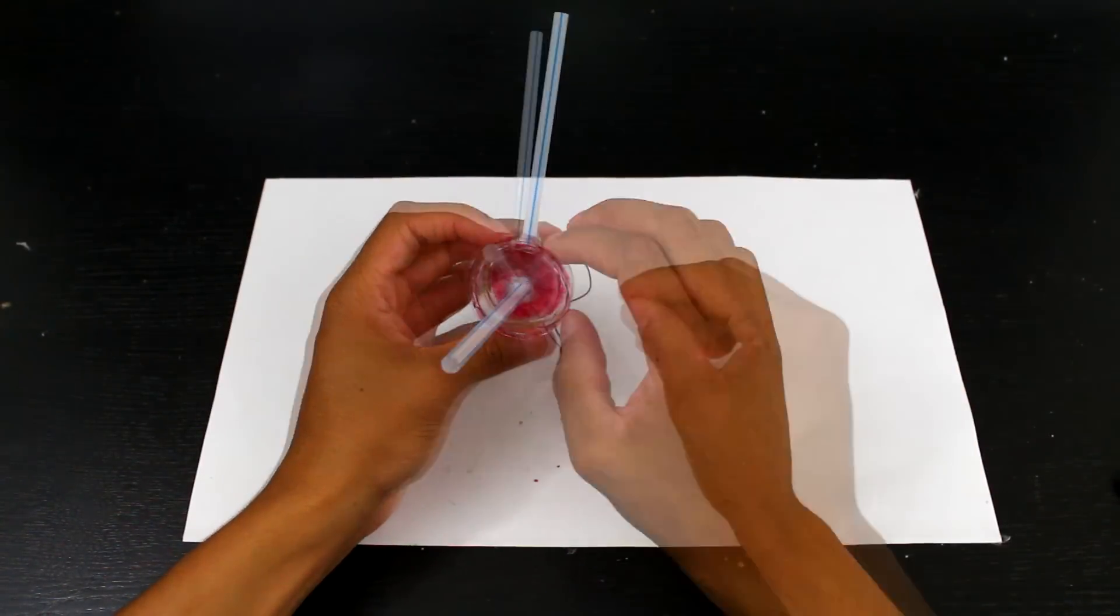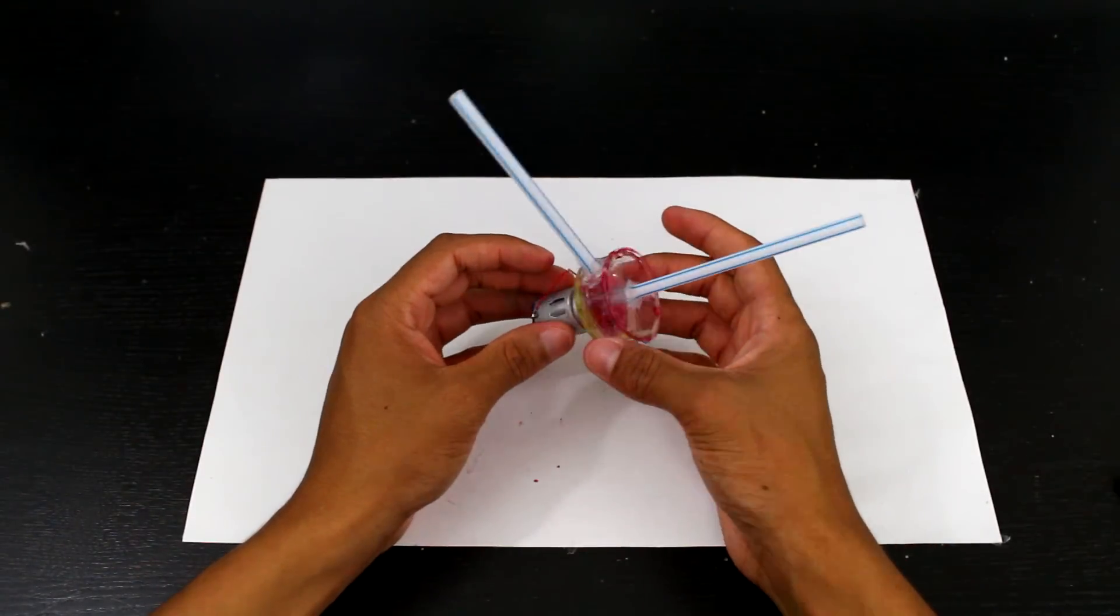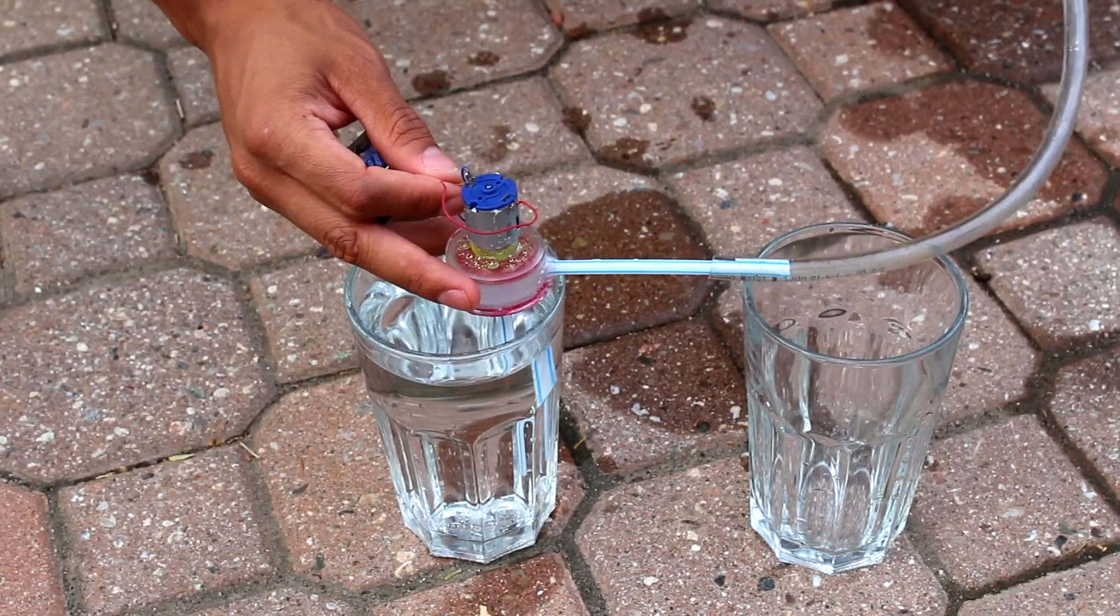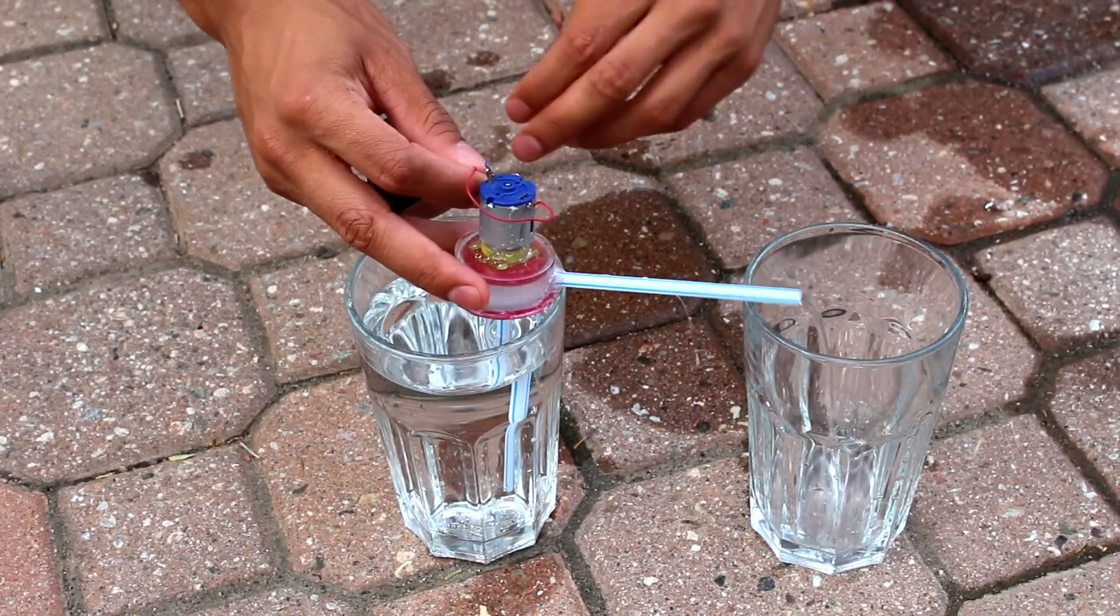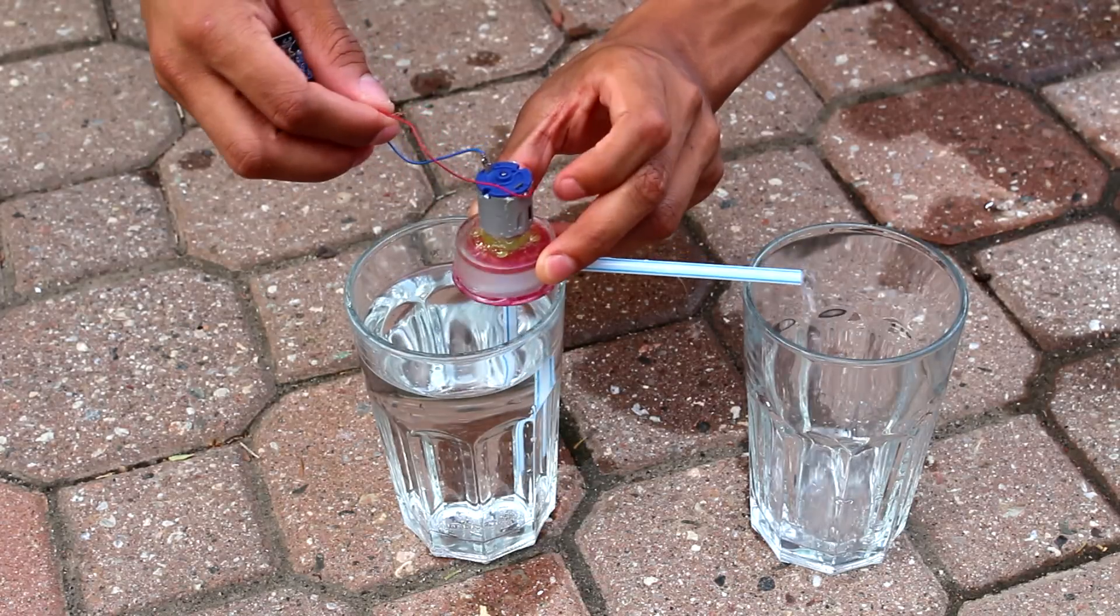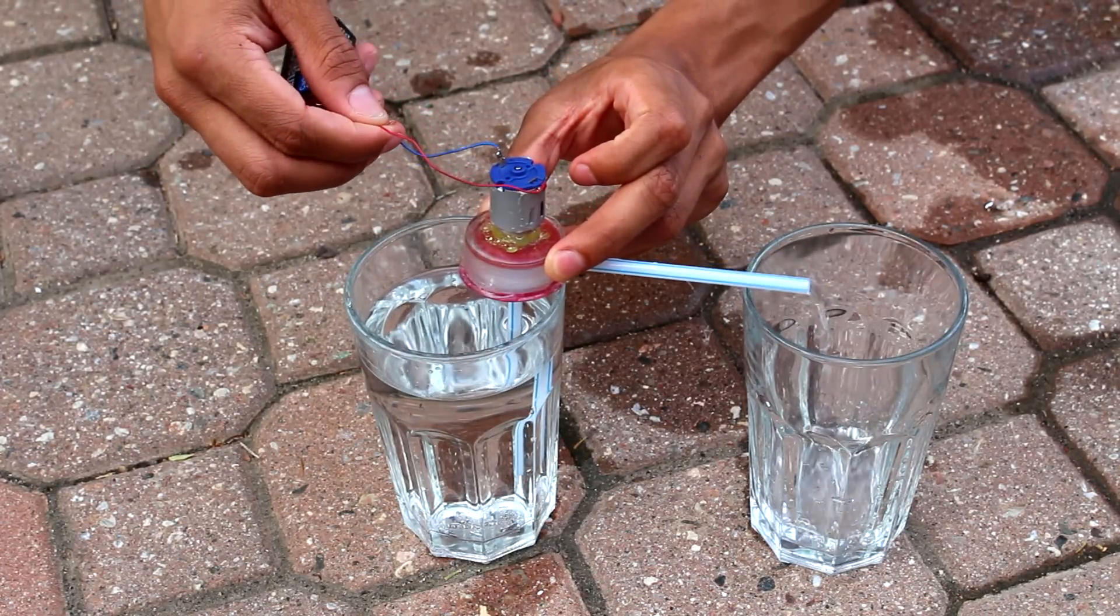And now we have our finished product, let's test it out. To test out our finished pump, I first have to prime it by sucking some water into it. No pump will work if it's not filled with water first. And as you can see, it pumps alright.